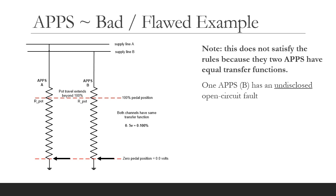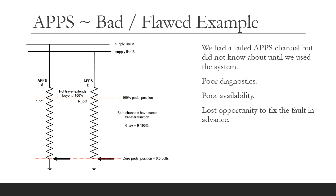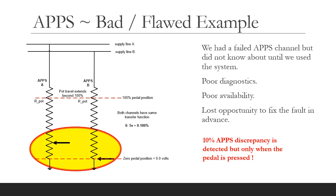Imagine that the car has passed scrutineering and part way through the first dynamics day we develop an open circuit fault on APPS B due to a broken wire. There is no power to the potentiometer so the APPS B signal remains at zero volts. The driver lines up on the start line and floors the accelerator pedal — APPS A responds but APPS B stays at zero volts. The APPS detects a 10% discrepancy, the car requests zero torque demand, goes to a halt, the team fails the dynamic event, gets no points, and has no idea what went wrong.